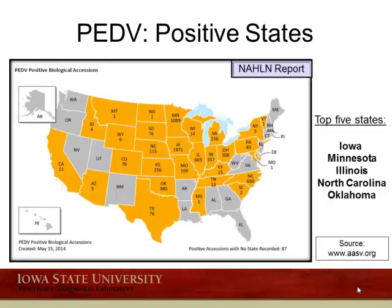This figure showing the United States is from the NALN report, available through the American Association of Swine Veterinarians webpage. You can see a representation of the different states that have at least one positive accession. As of May 15th it was 29; it is now up to 30 with the addition of Virginia. The top five states with the highest number of positive accessions are, in order: Iowa, Minnesota, Illinois, North Carolina, and Oklahoma.